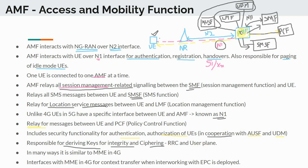AMF is responsible for deriving keys for integrity and ciphering for RRC and the user plane. We have a dedicated section on security in this course where we will see how those keys are derived. In many ways AMF is similar to the MME — the Mobility Management Entity — in 4G, though there are quite stark differences as well. If you want to correlate 4G and 5G, you can think of AMF as having similar functionality to the MME.